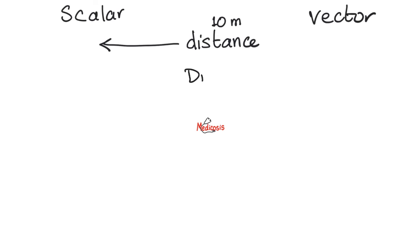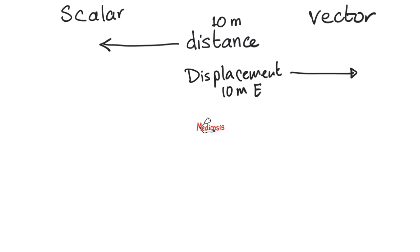But how about displacement? For example, 10 meters east. When I say 10 meters east, it has a magnitude and a direction, so this is a vector.